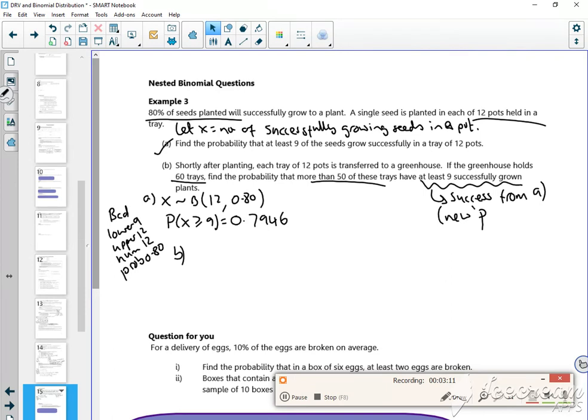Because I've got all these trays now. Instead of it being the pots, I've got my greater than or equal to 9 pots. That's my 0.7946, and I'm going to use it for the next bit. So I'm going to call it Y. It's a different distribution. I've got 60 trays and the probability is 0.7946.